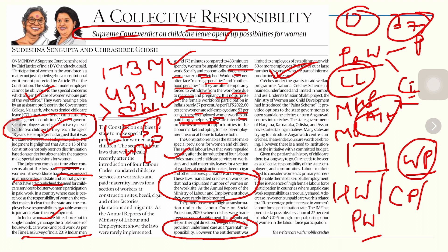The National Crèche Scheme remains underfunded with limited participation. Under Mission Shakti, the Ministry of Women and Child Development introduced a scheme called Palna, which provides an option for state governments to open standalone crèches or convert anganwadi centers into crèches. States like Haryana, Karnataka, Odisha, and Assam have started such initiatives. These endeavors are worth celebrating, but there is a need to institutionalize them with a committed budget to fully empower the women workforce.